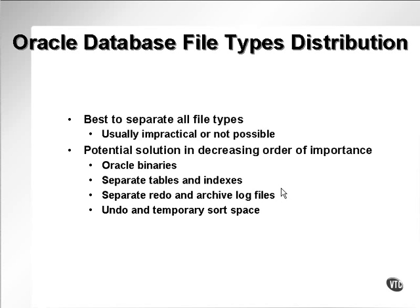The solutions for splitting up files physically on the disk, namely database files in decreasing order of importance, are this list here. The Oracle binaries are accessed the most heavily — the executable files, on Windows the oracle.exe file, the processes run by Oracle on a Unix box. These are accessed most heavily and should be in the fastest, most easily accessible area.